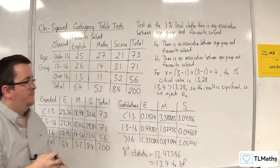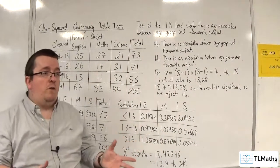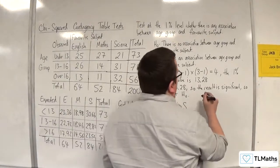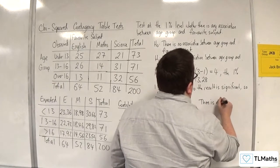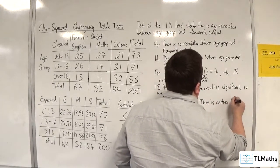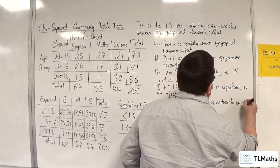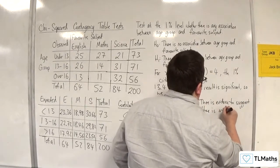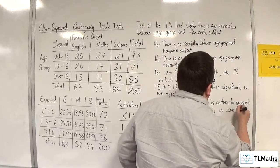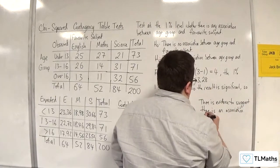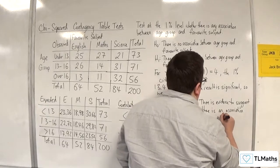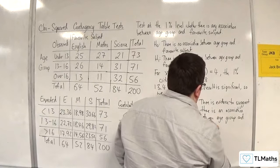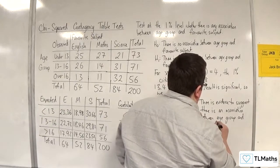So we then need to write our conclusion that's non-committal and in context. There is evidence to suggest there is an association between age group and favourite subject.